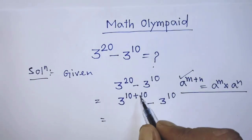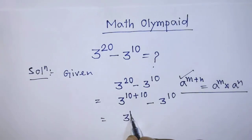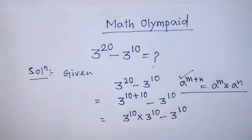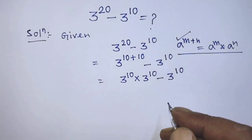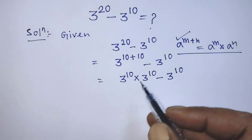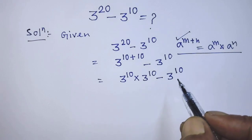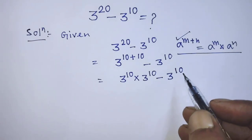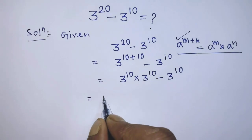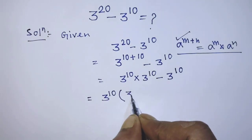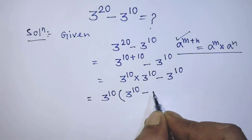According to this formula, it will be 3 to the power 10 times 3 to the power 10, minus 3 to the power 10. In this algebraic expression there are two terms, and the common factor of both terms is 3 to the power 10. So it will be 3 to the power 10 times, open bracket, 3 to the power 10 minus 1.